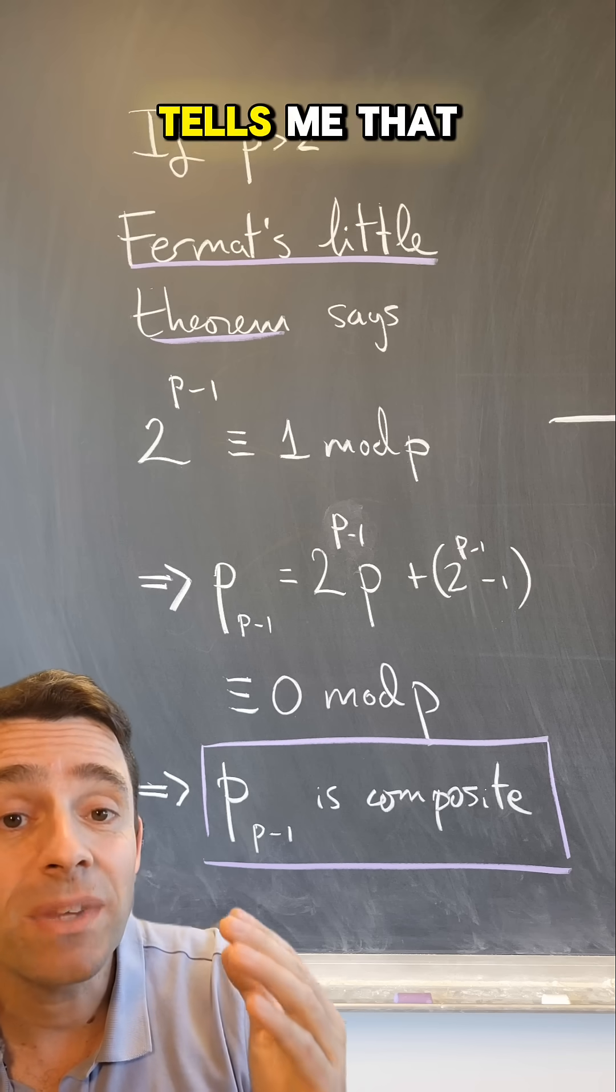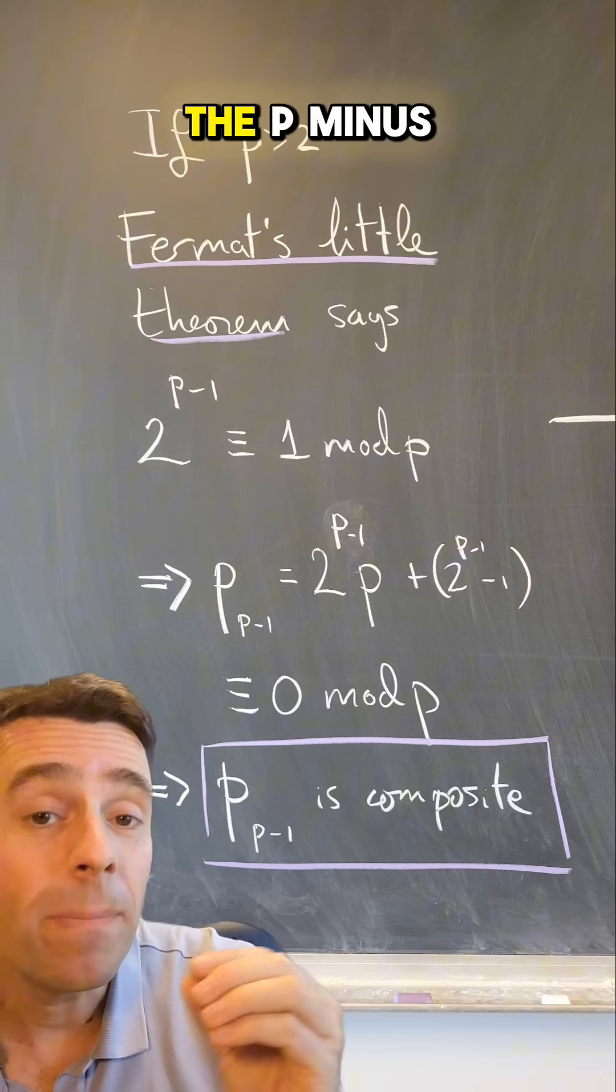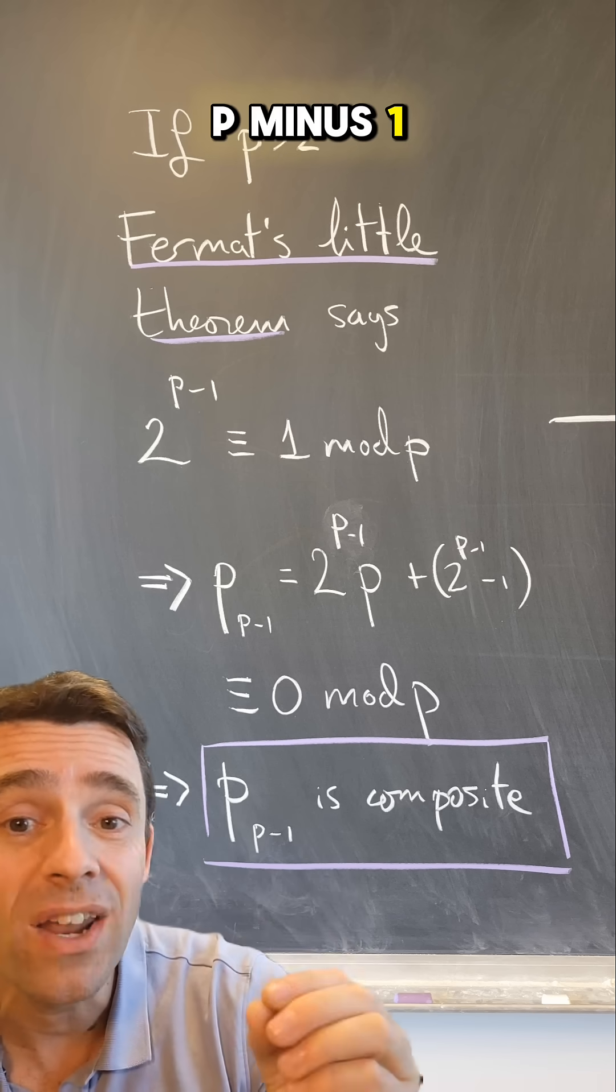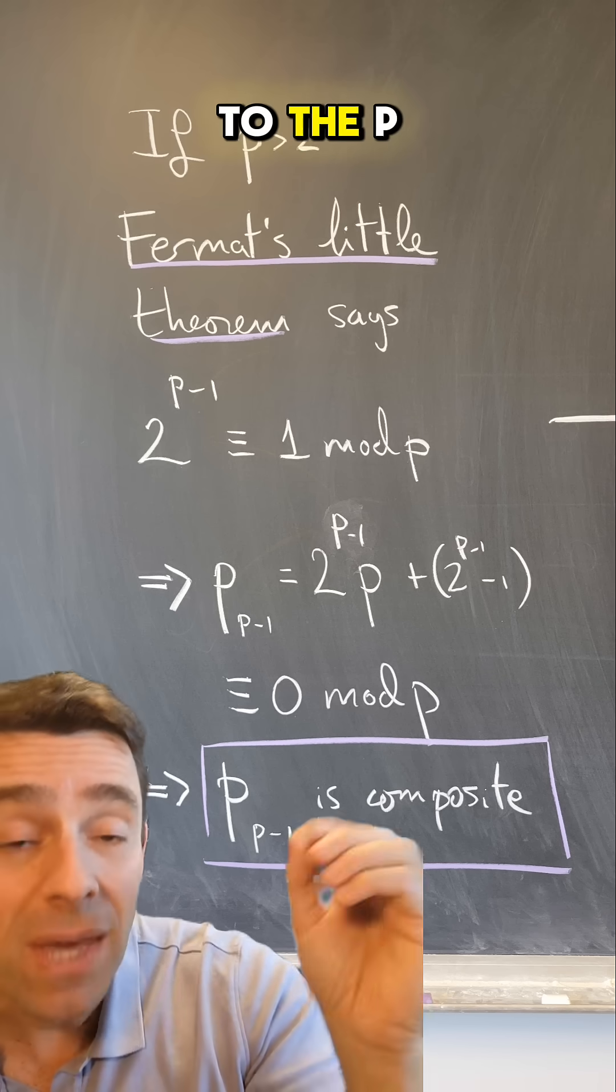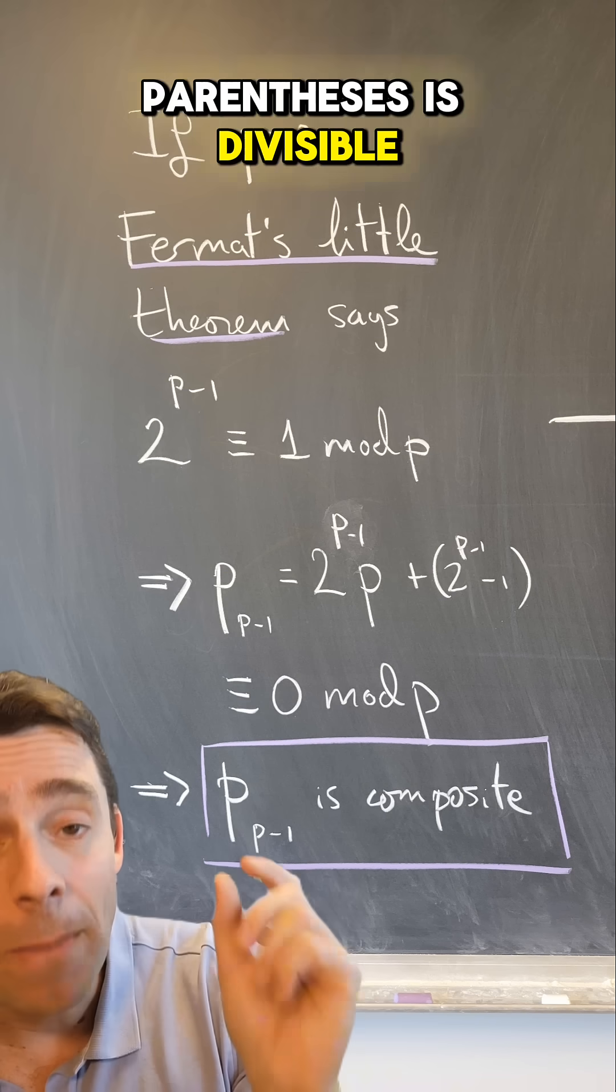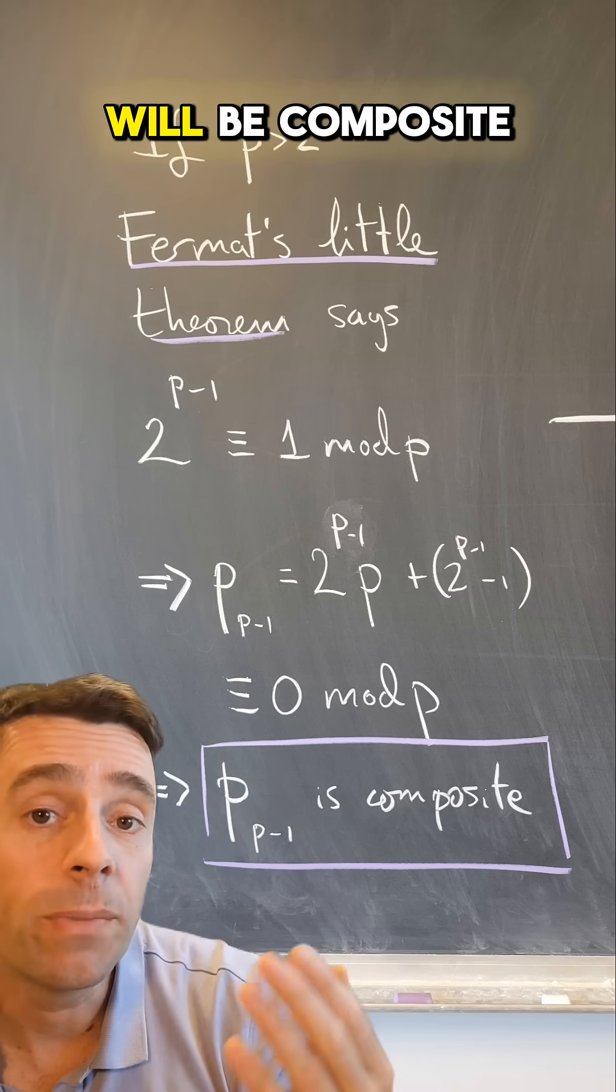Since Fermat's theorem tells me that 2 to the p minus 1 is congruent to 1 modulo p, then the p minus 1 prime in that tower, the p sub p minus 1, will be 2 to the p minus 1 times p plus 2 to the p minus 1 minus 1, but that last factor in the parenthesis is divisible by p. So the whole number is divisible by p, and therefore it will be composite.